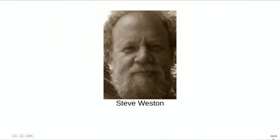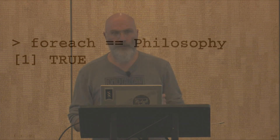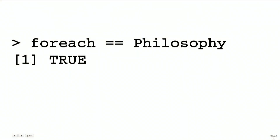My friend and at the time my colleague, Steve Weston, looked at this problem and thought there's got to be a better way — a different approach. What if package authors could decide which parts of their program can run in parallel, and separately, the users of those packages decide how those parts should run in parallel based on their circumstances and available resources? This is the philosophy of foreach, and it's a philosophy shared by Henrik's more recent future package. We abstract away the implementation of a particular parallel portion of our code and leave that up to the user to decide at runtime.